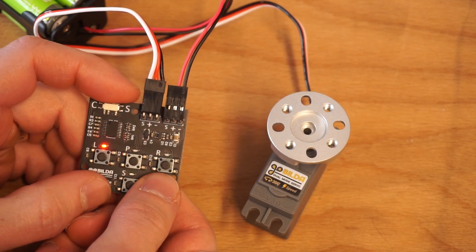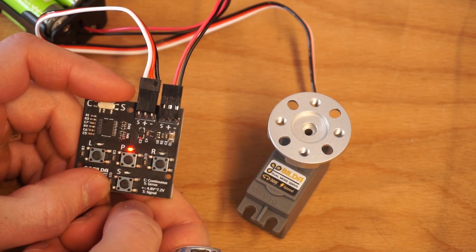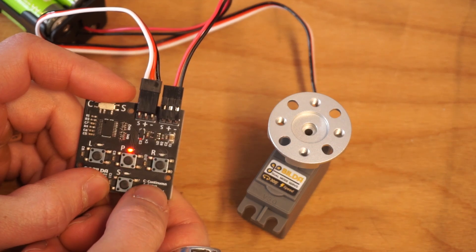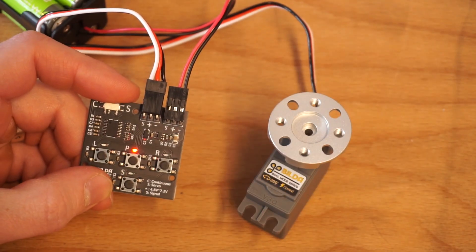If I push left, it's going to go all the way to the left. Right, all the way to the right, and P will stop it in the midpoint of the servo. That's it. Best of luck on your robotics project.